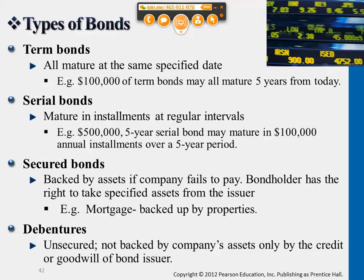Debenture is just the opposite of secured bonds. Most bonds are not really backed up by assets, so debentures are very popular too — not secured by any type of asset. A bond not secured by any asset usually has an interest rate that is slightly higher than secured bonds, since secured bonds are less risky, so their interest rate is also lower.